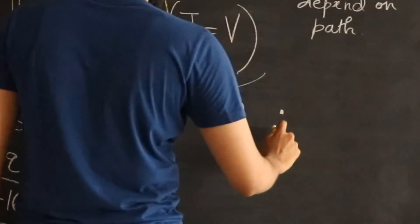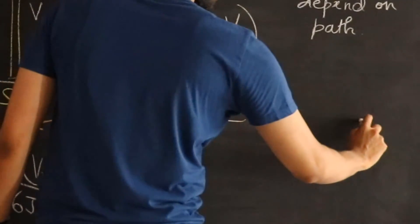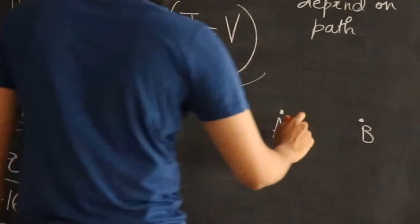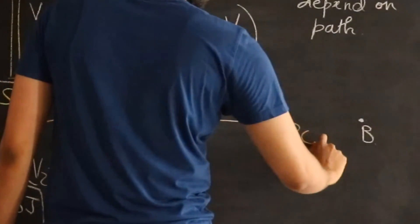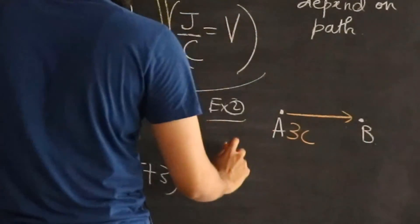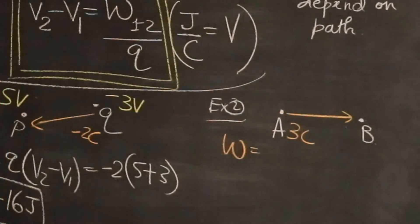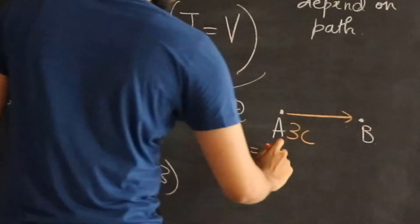Let me call this point as point A and point B. And here's the data. I tell you to move a 3 coulomb charge from here to here. The work done by me, without acceleration, by me, let's say it's 30 joules.